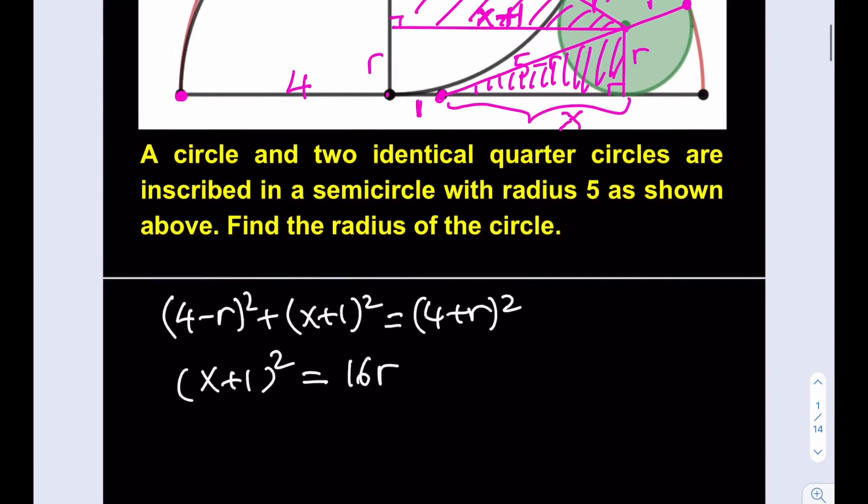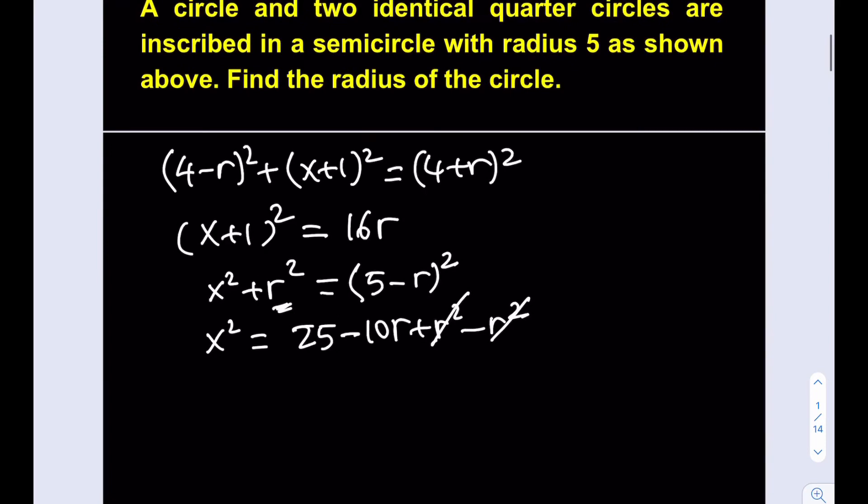In the second triangle, it's going to be x squared plus r squared equals 5 minus r squared, because the hypotenuse is 5 minus r. So I'm going to isolate x squared from here. I can expand this: 25 minus 10r plus r squared minus r squared. I'm going to subtract that from both sides and that's going to give me 0. So x squared equals this.